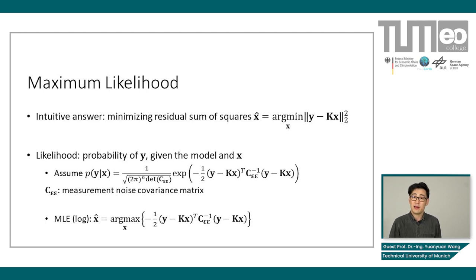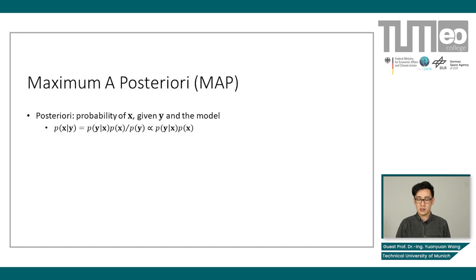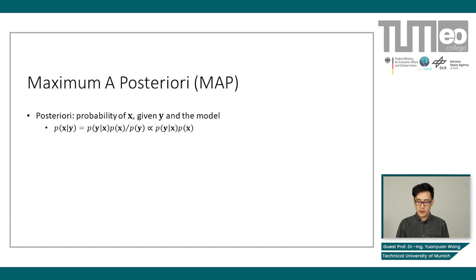This is the maximum likelihood estimation — a very short introduction. But some of you may say: you're maximizing the probability of y, which is data, but we want to maximize the probability of x, which is our signal. You're absolutely right. So this brings me to the maximum a posteriori estimator. The posterior means the probability of x given the observation y and the model, and it can be written as the formulation shown below.